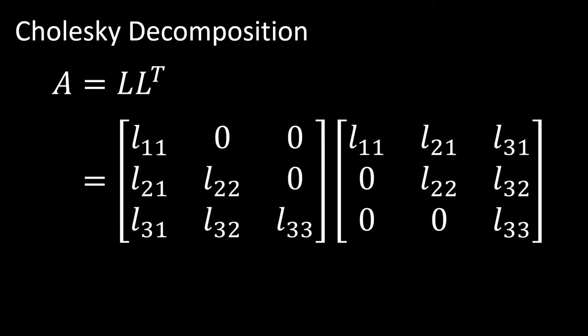The Cholesky decomposition decomposes a matrix into a lower triangular matrix right-multiplied by that lower triangular matrix transposed — which looks like A = L × L^T. This is an exact variant of the LU decomposition because we have a lower triangular matrix and an upper triangular matrix, except our upper triangular matrix is just the lower triangular matrix transposed. The key benefit is that we only need to keep track of one matrix, since we can transpose it and right-multiply to get back our A matrix.